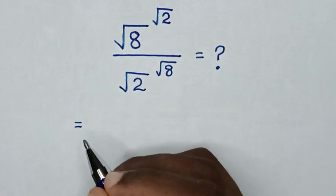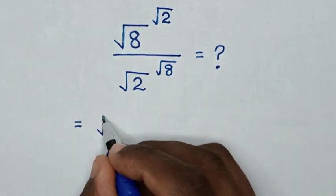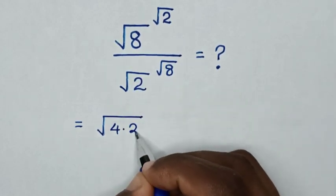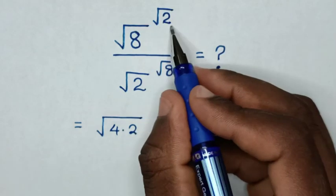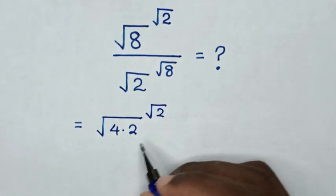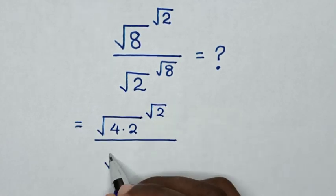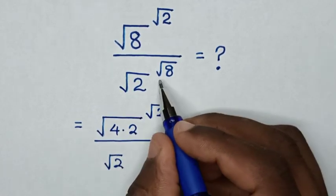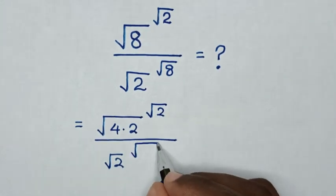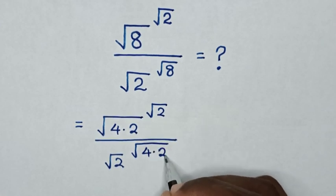It will be equal to: square root of 8 is the same as square root of 4 times 2, then power of square root of 2, over square root of 2 power of square root of 8, which is the same as square root of 4 times 2.